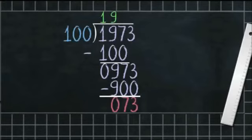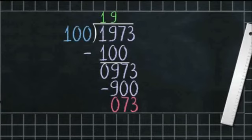Continuing: 7 minus 0 is 7, and 9 minus 9 is 0. So the quotient is 19 and the remainder is 73, which is the tens and ones digit of the given number. Dear students, in the same manner we can divide any number by multiples of 10.